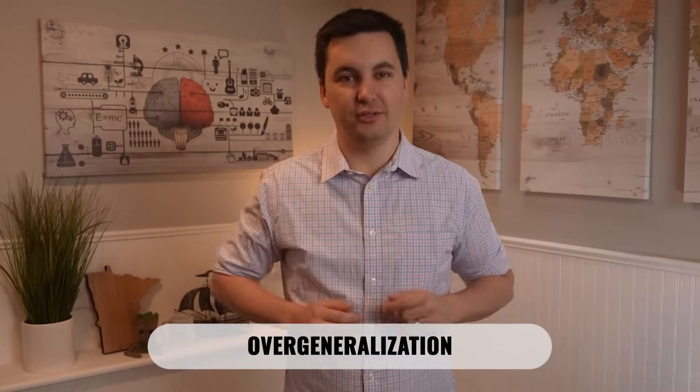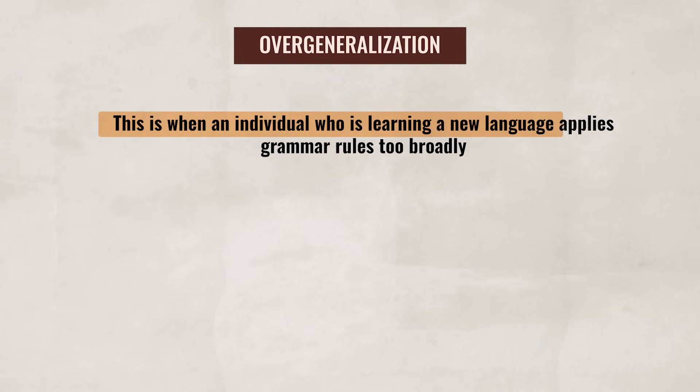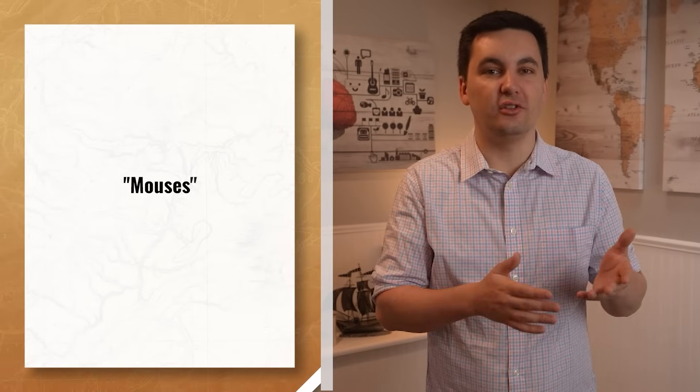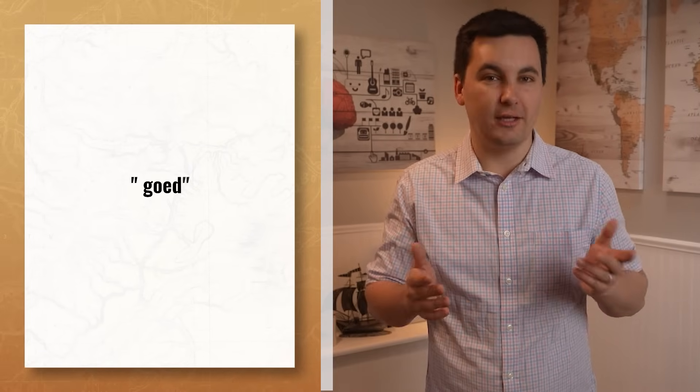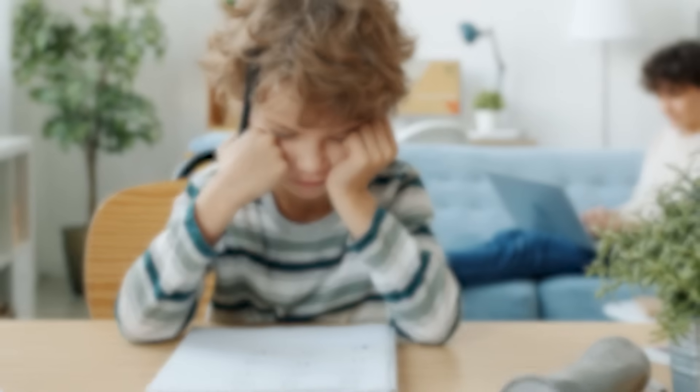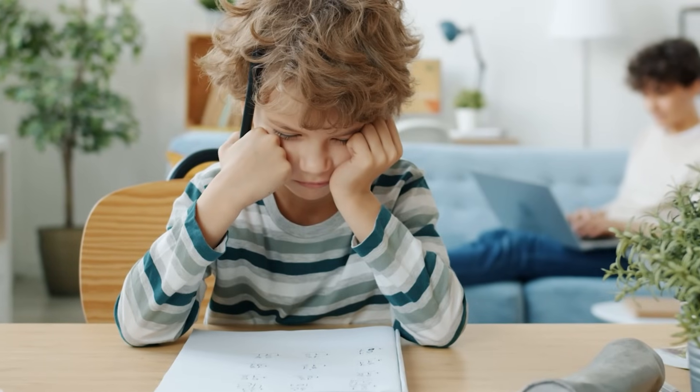Whenever an individual is learning a new language, they are going to make mistakes — whether a child is learning their first language or an adult is learning their second, third, or fourth. One mistake that often happens is overgeneralization: when an individual applies grammar rules too broadly. For instance, when learning English, someone might say 'mouses' instead of 'mice.' Overgeneralization happens because the learner understands some rules of the language and is testing them out. Over time, they'll figure out the exceptions to the rules and will reduce their mistakes.